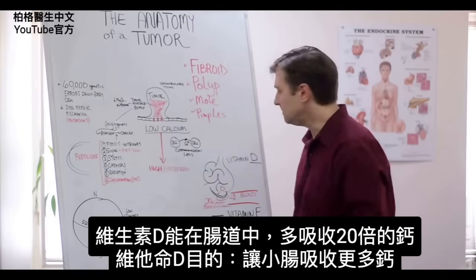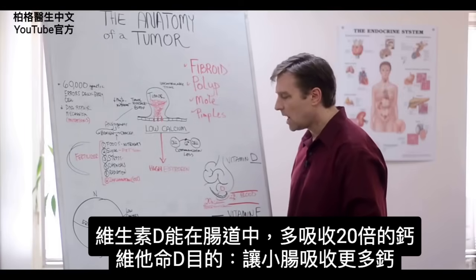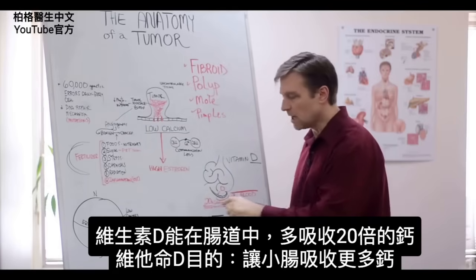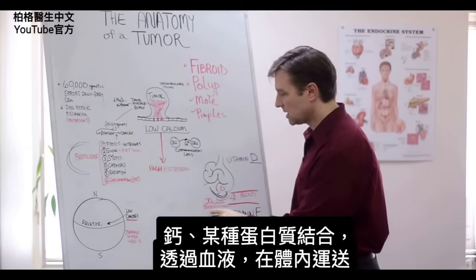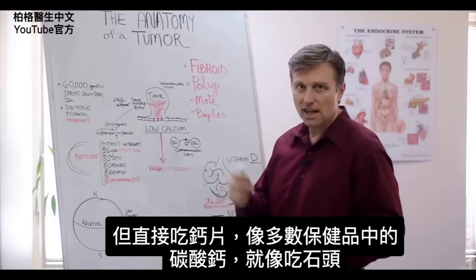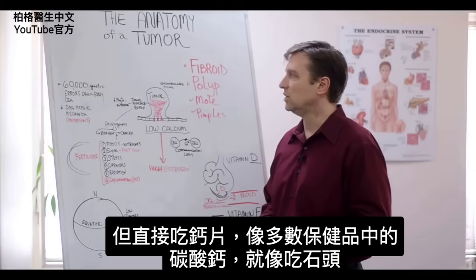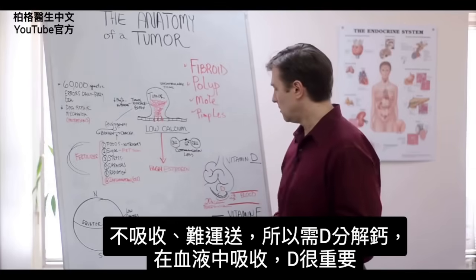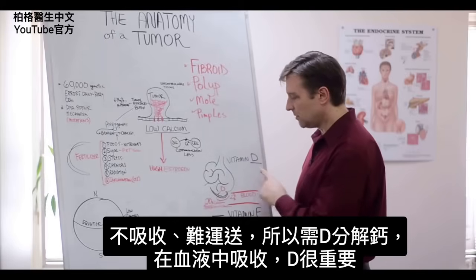The way it works is vitamin D increases calcium absorption in the intestine by 20 times. The purpose is to get a lot more absorption into the small intestine so it can combine with a certain protein, and once it's connected to that protein, it can go through the blood and transport through the body. Just straight calcium — like calcium carbonate found in most supplements — doesn't really do anything; it's like eating a rock. It's hard to absorb and not transported. So you need vitamin D to break it down and get it absorbed into the blood.